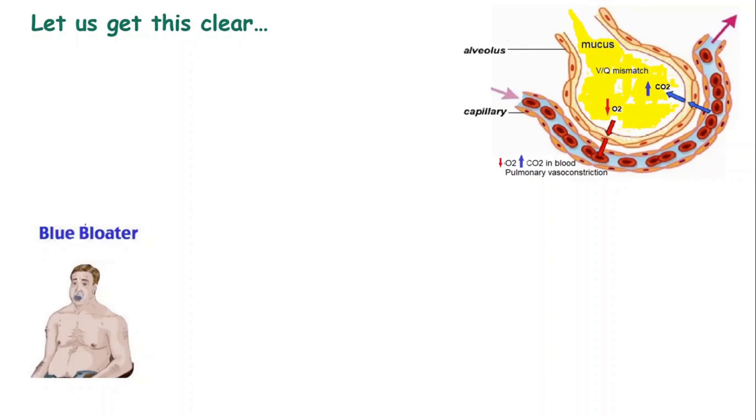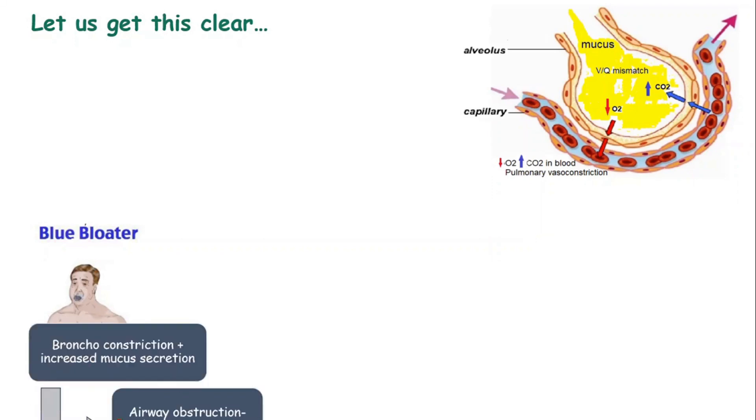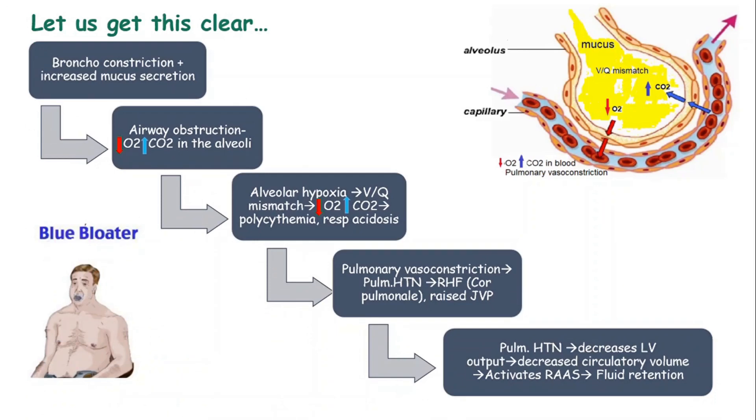Okay, now before we go any further, let's get this clear what actually happens within the body of a blue bloater. We saw that there is excess mucus secretion into the airways and also bronchoconstriction because of smooth muscle contraction. So there is an airway obstruction. Patients present with productive cough as a result of mucus and dyspnea and wheeze because of airway obstruction.